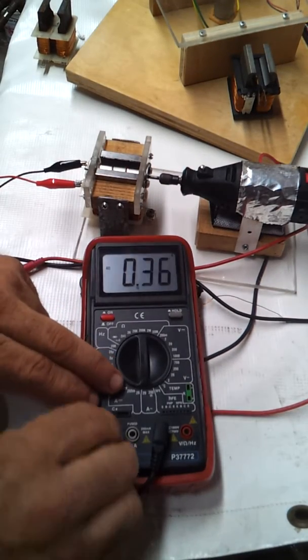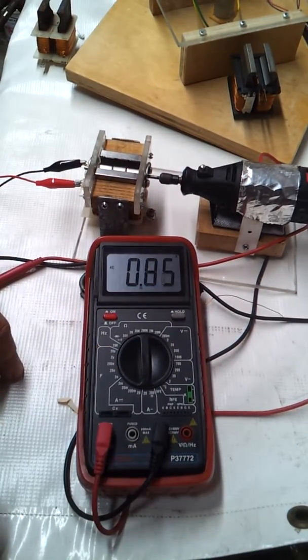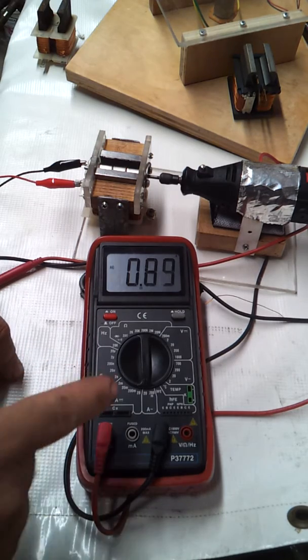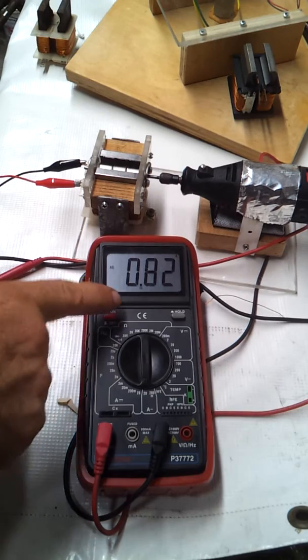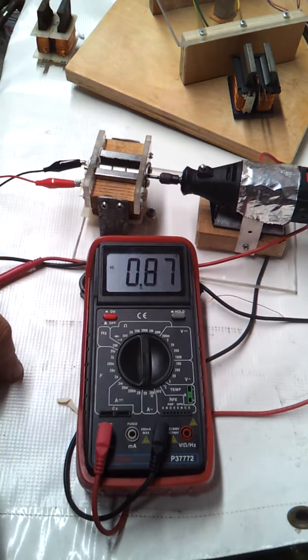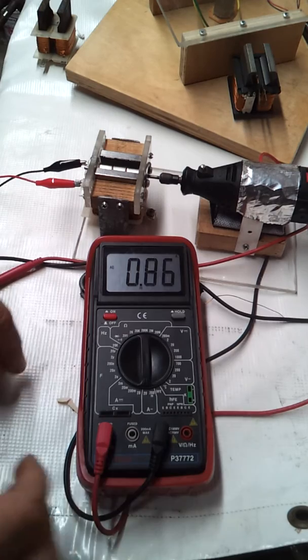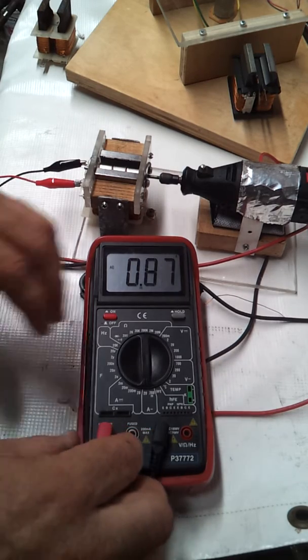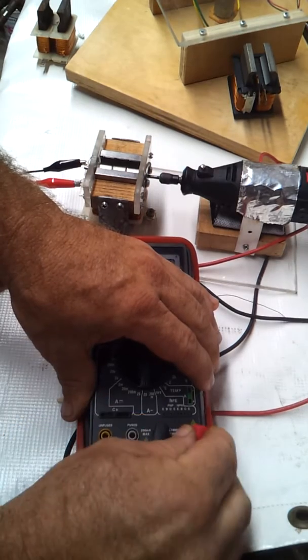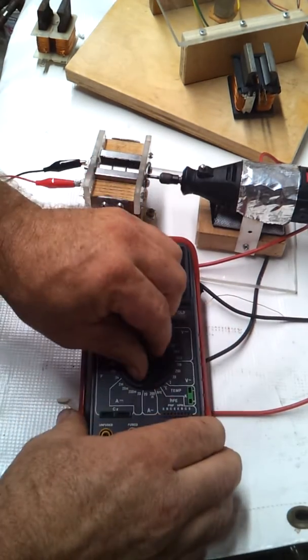So hold on let me do that again. So I was running at about 325 volts and then about 0.85 amps, so it's about 850 milliamps. Let's see how many volts one more time.